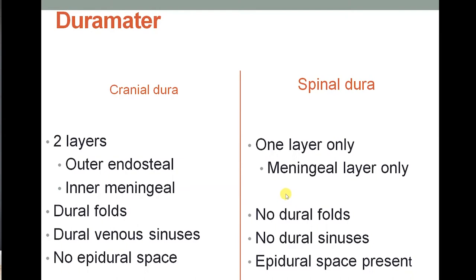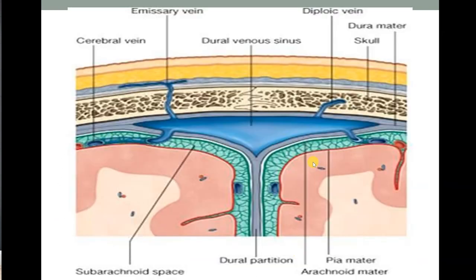One more difference: the epidural space, which is present outside the dura mater, is not present in the cranial dura mater — it is only present in the spinal dura mater, where it contains semi-liquid fat, loose areolar tissue, and the internal vertebral venous plexus.